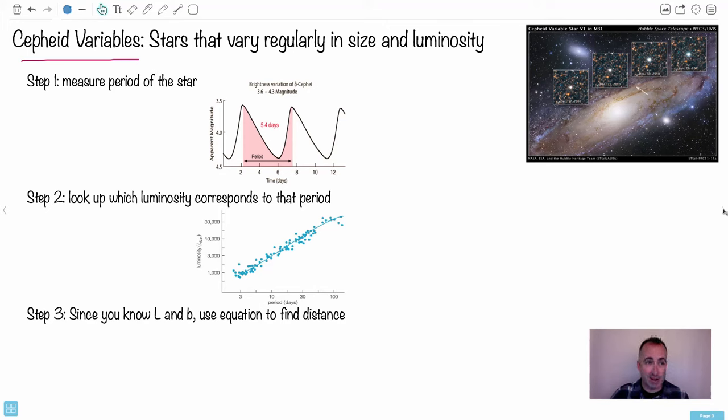Another way to find the distance to stars is to use what are called Cepheid variables. These are stars that vary regularly in size and luminosity. For example, this is a star right here called V1 in the Andromeda galaxy. This is an example of one of these variables here.